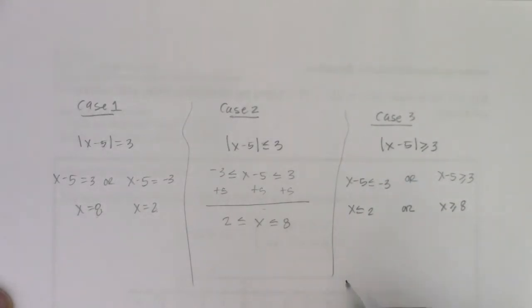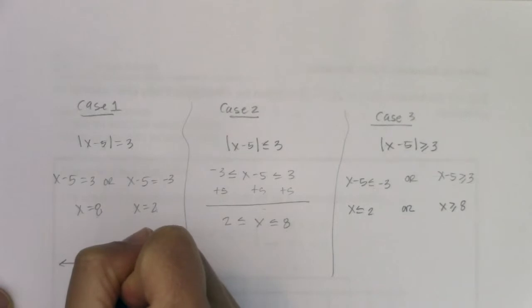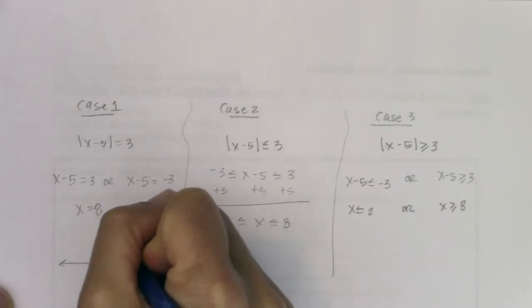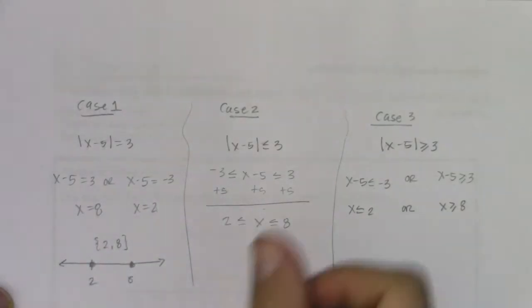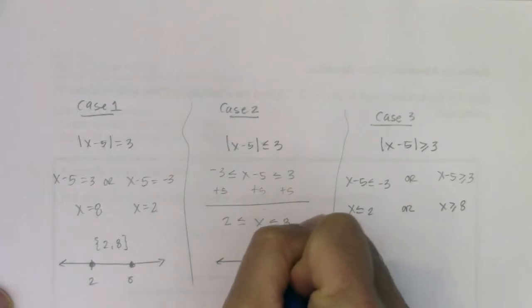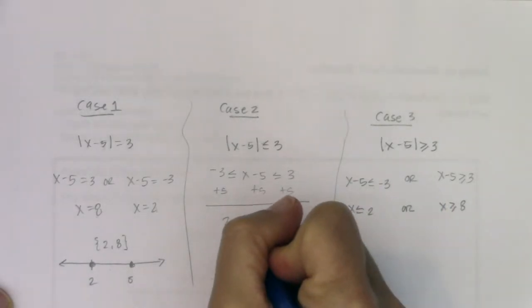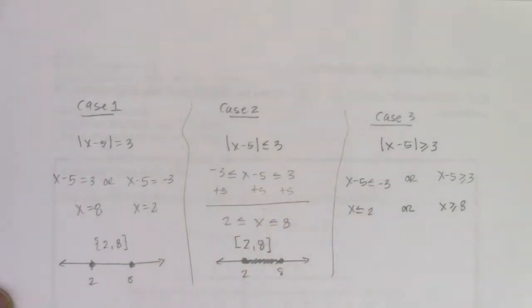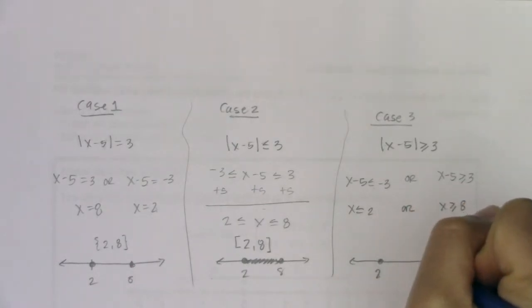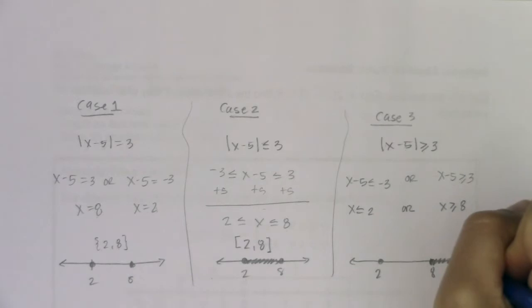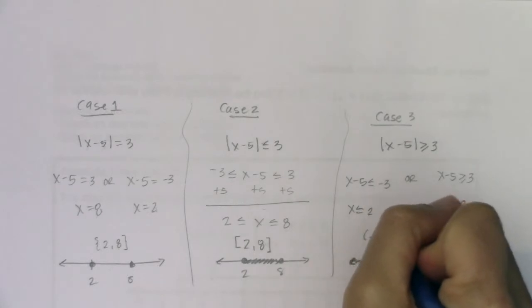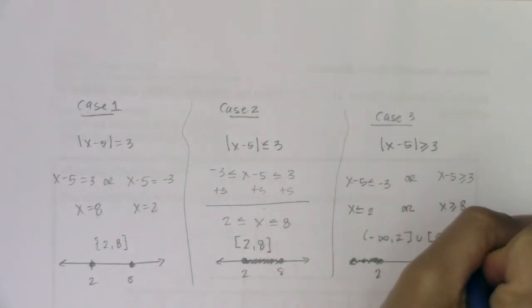If I was going to write these on a number line: for case one, the answers are exactly two and eight. For case two, I would put two and eight on the number line and shade between them — in interval notation, that's two to eight with brackets. For case three, I'd shade right of eight and left of two, giving two intervals: negative infinity to two, union eight to infinity.